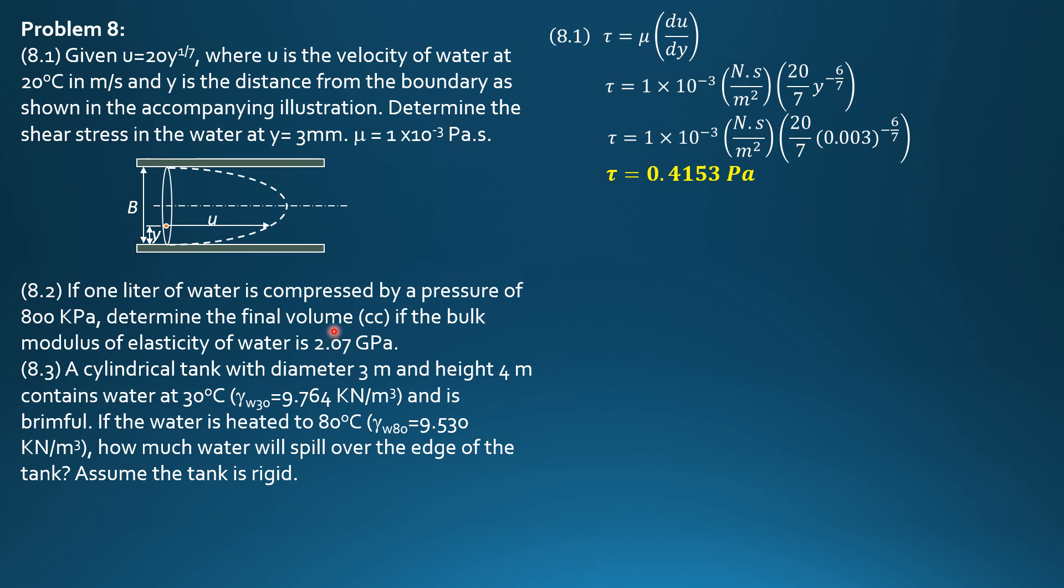Bulk modulus of elasticity is negative volume initial delta P over delta V, where delta V is final volume minus initial volume. The initial volume is 1 liter or 1,000 cubic centimeters.